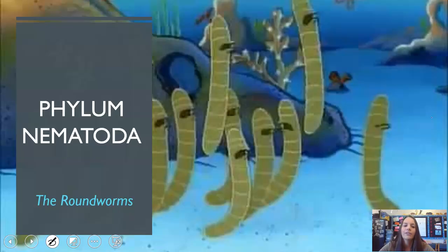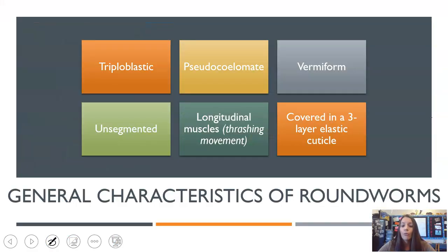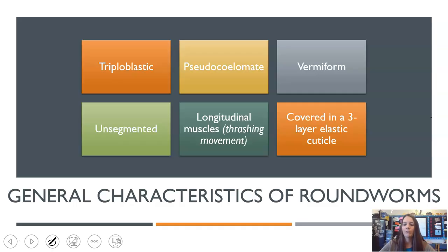Last up for this video is phylum Nematoda — the roundworms. Roundworms are triploblastic, pseudocoelomate, and unsegmented, very similar to the rotifers. This time they are vermiform, which means worm-shaped, and they have longitudinal muscles running down their body that help with a thrashing movement. They are covered in a three-layer cuticle.